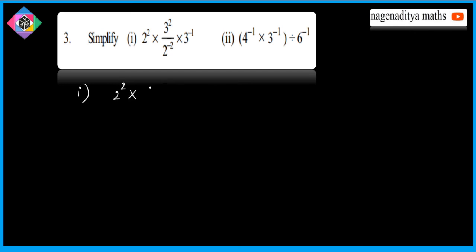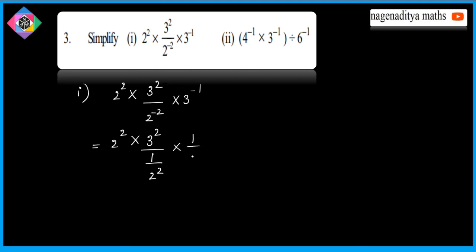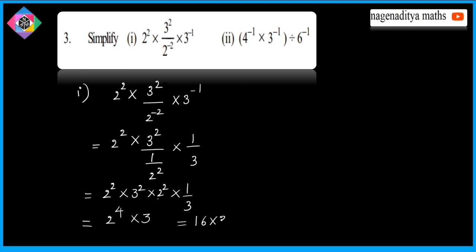Problem: 2² × 3² divided by 2^(-2) × 3^(-1). Converting the denominator: 2^(-2) = 1/2² and 3^(-1) = 1/3. So the expression becomes 2² × 3² × 2² × 3 = 2^4 × 3^3.